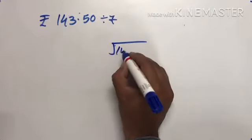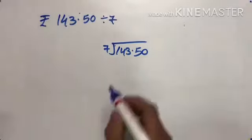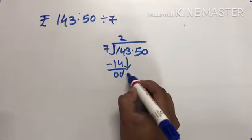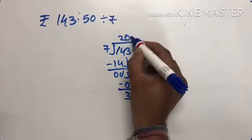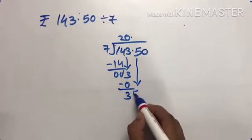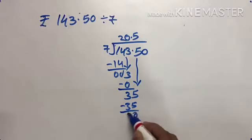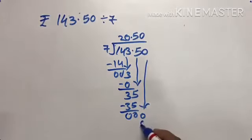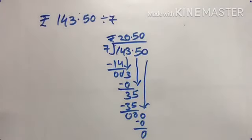143.50 divided by 7. 7 times 2 is 14. 14 minus 14 is 0. 3 is smaller, so 7 times 0 is 0. Now the point, we put the point here. 50 divided by 7. 7 times 7 is 49. 50 minus 49 is 1. Bring down 0, we have 10. 7 times 1 is 7. 10 minus 7 is 3. But wait, in any table of 0, the answer is 0. So our answer is rupees 20.50.